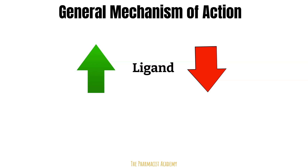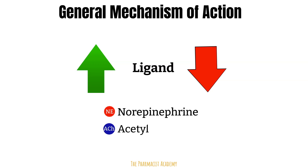In the sympathetic nervous system, the main ligand that interacts with the target organ is norepinephrine, or noradrenaline. For the parasympathetic, it's acetylcholine. Next, I will provide more information about the different drug classes, the mechanism of action, examples of drugs in that class, and their indications. Side effects will come after all of that.